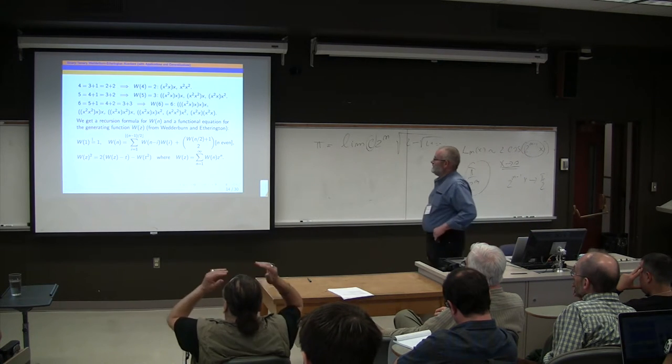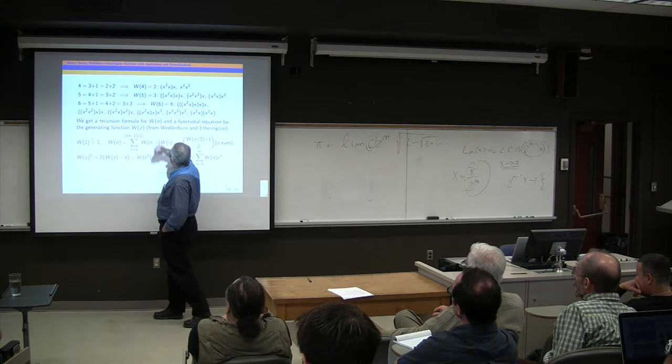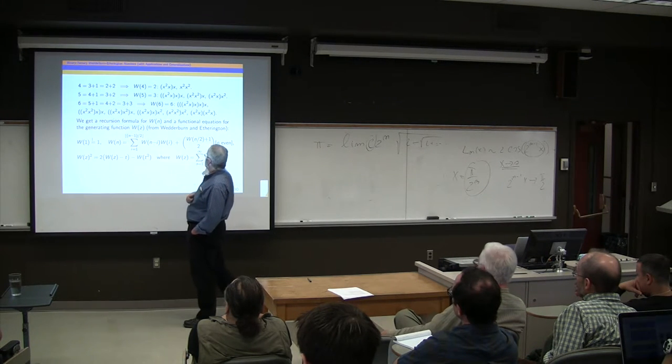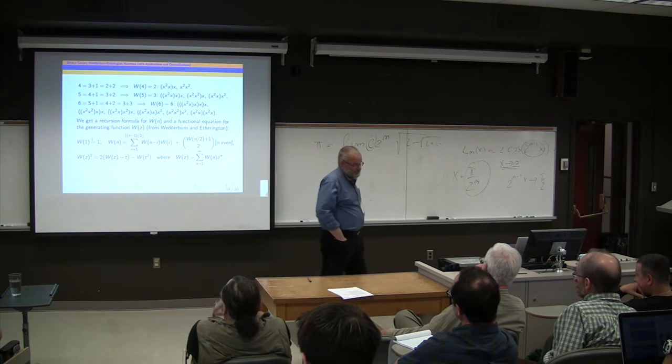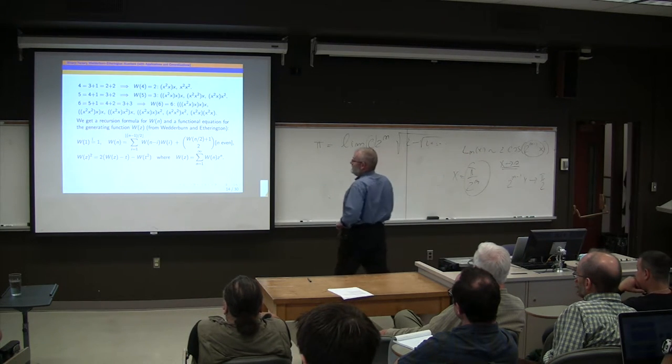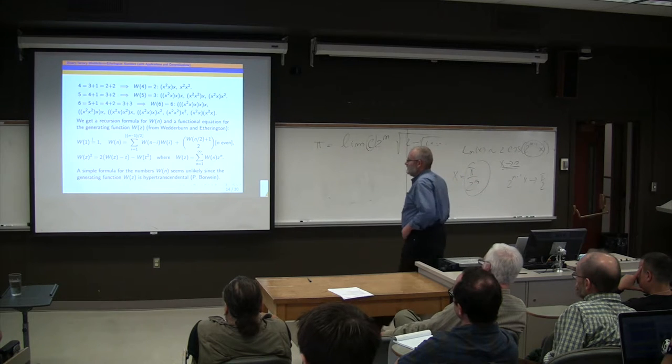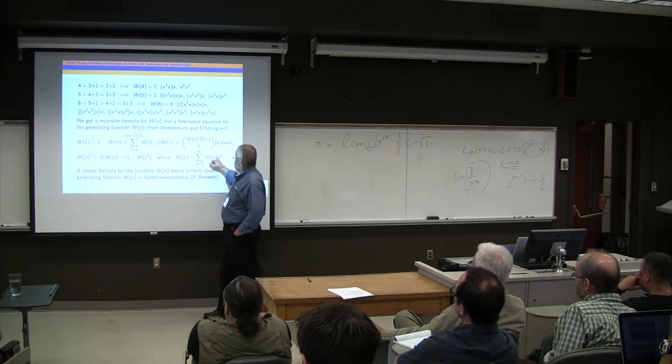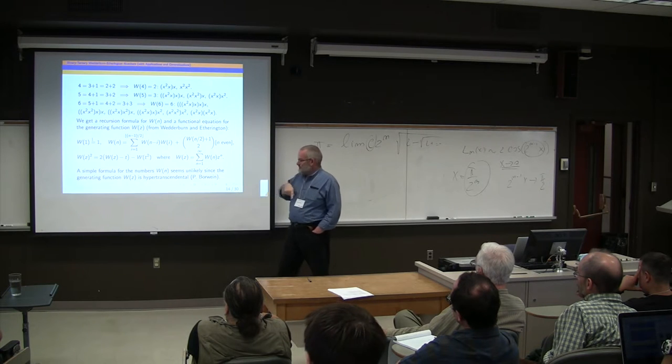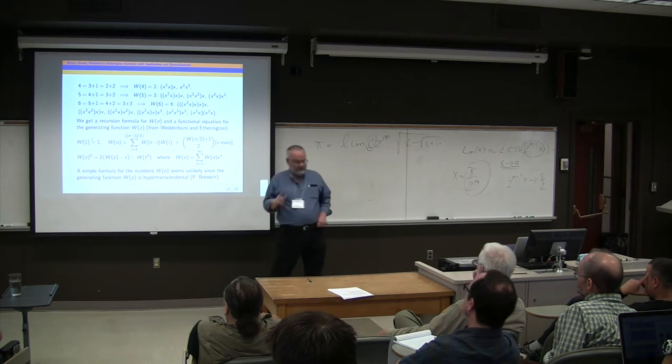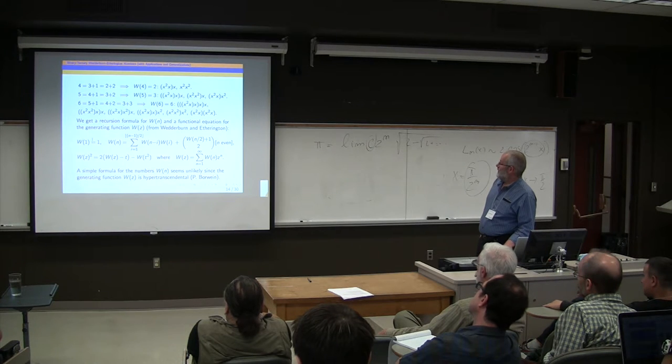This is a recursion formula on the first line. This is basically just adding up the way I did here, factoring an n-th power into two smaller powers. And there's a bit of a wrinkle when n is an even number. You have to add this extra chunk. And that gives a functional equation for the generating function, which looks like that. And now, unfortunately, it seems that there's unlikely to be a nice closed-form solution for these numbers. Because if you look at this functional equation, John Konhauser has proved that this generating function is a hyper-transcendental function. So it probably doesn't have nice coefficients in the power series.